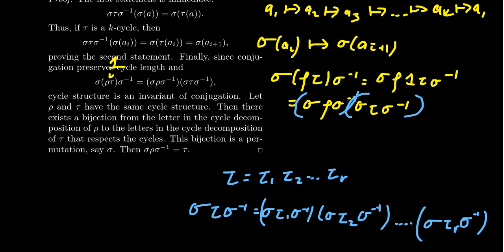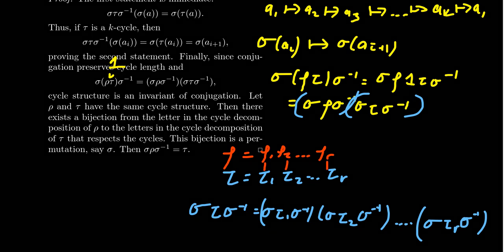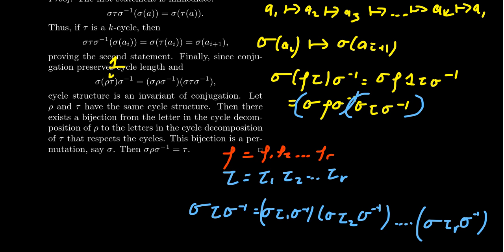For the other direction: if you have two permutations with the same cycle structure — say rho with cycles rho1, rho2, ..., rho_r which are k1-cycles, k2-cycles, ..., kr-cycles respectively, and another permutation with the same structure — we can make a bijection between the letters appearing in rho with the letters appearing in tau by going through the list and corresponding all the numbers together. Let me show you an example to make this more explicit.